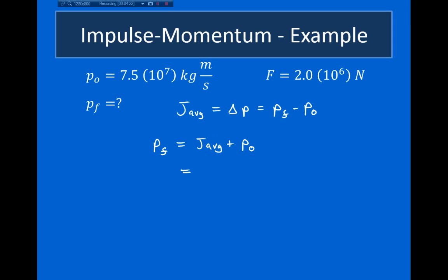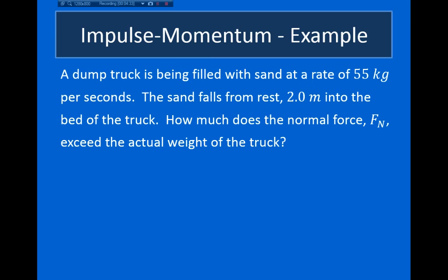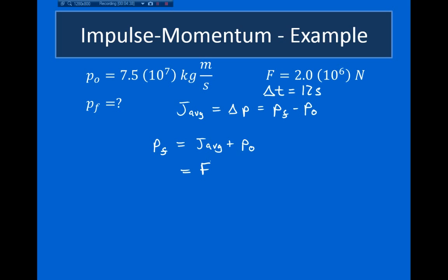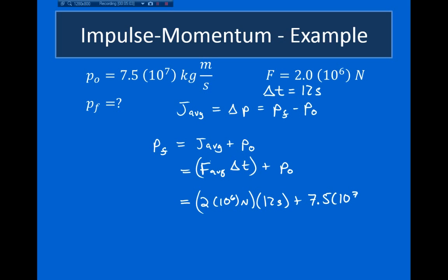Since I wasn't given the impulse but I was given force and the time over which the force was exerted — delta T was 12 seconds — I can go back to the definition for impulse. This is equal to average force times delta T, plus the initial momentum. Plugging in 2 times 10 to the 6 Newtons times 12 seconds plus the initial momentum, we see that the final momentum of our system is equal to 9.9 times 10 to the 7 kilogram meters per second.